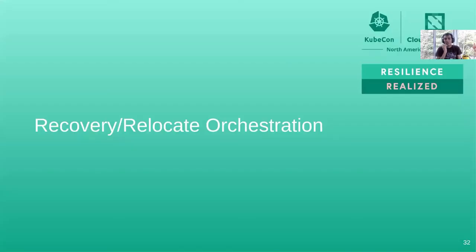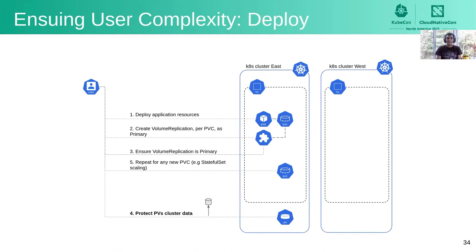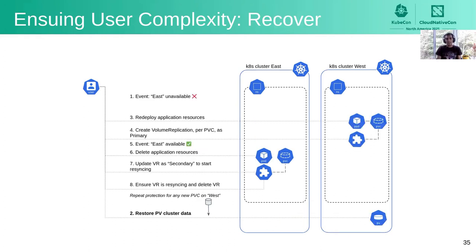For disaster recovery orchestration, although we have these various components, how complex is it for a user? As it stands, it becomes quite complex across three use cases: deploy, relocate, and recover. Starting with deploy: the user would have to deploy application resources to a cluster, create volume replication resources as primary to establish replication for every PVC in the namespace, ensure replication is occurring before backing up the PV cluster data, and repeat protection for any new PVC created by the application in that namespace.